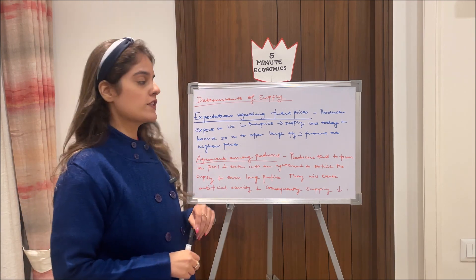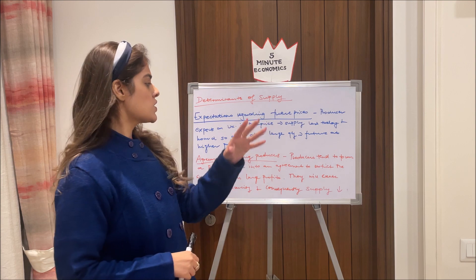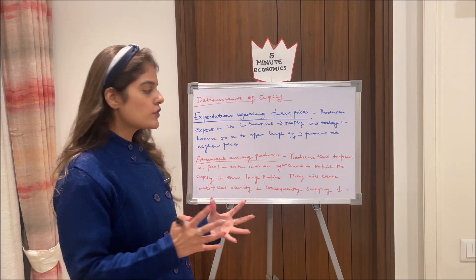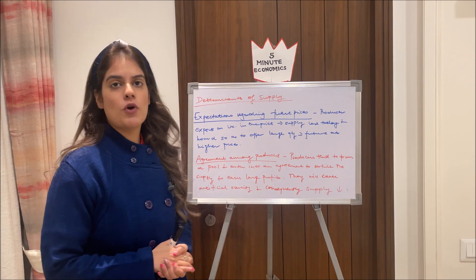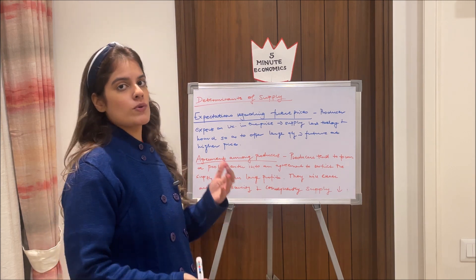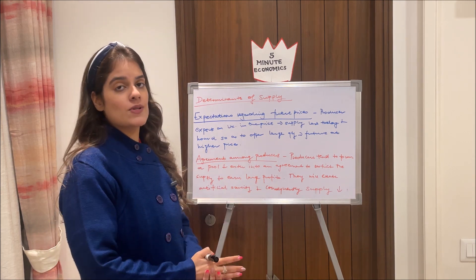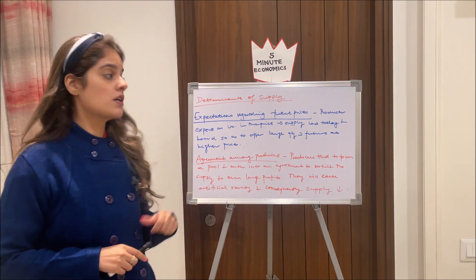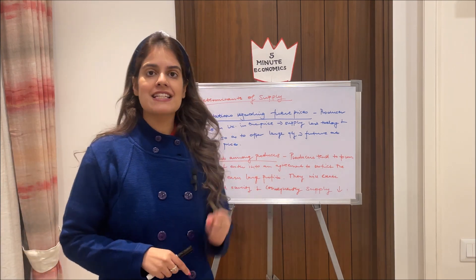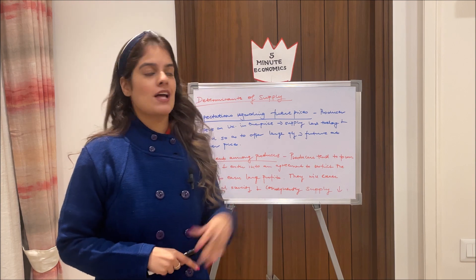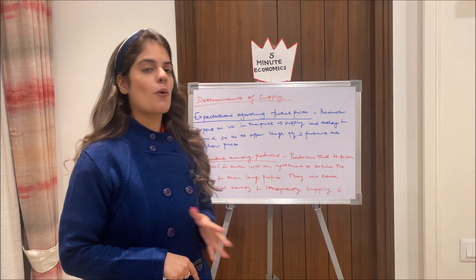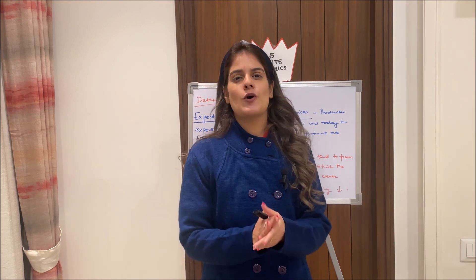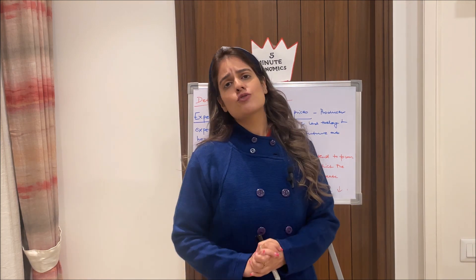The last determinant is agreement among producers. Producers sometimes act mischievously — they form a pool and enter into agreements to create artificial scarcity in order to earn large profits. When there is artificial scarcity, prices rise. In this scenario, the supply falls. That's all about the determinants of supply, and this is the last video of 2022.